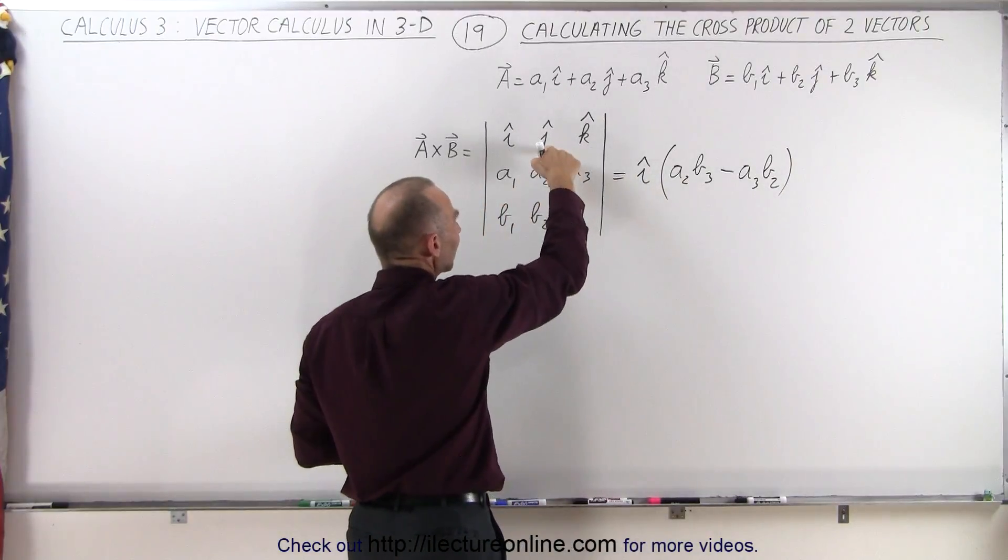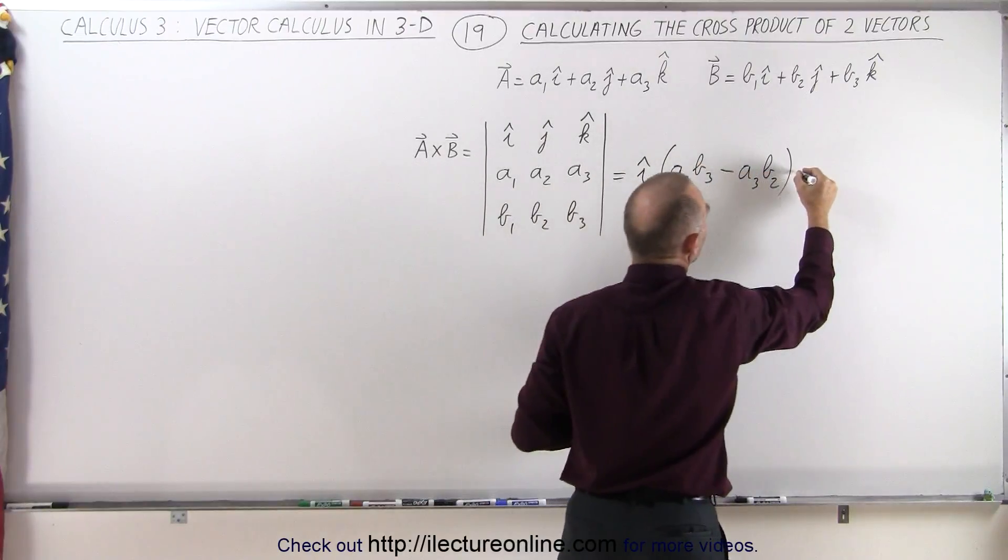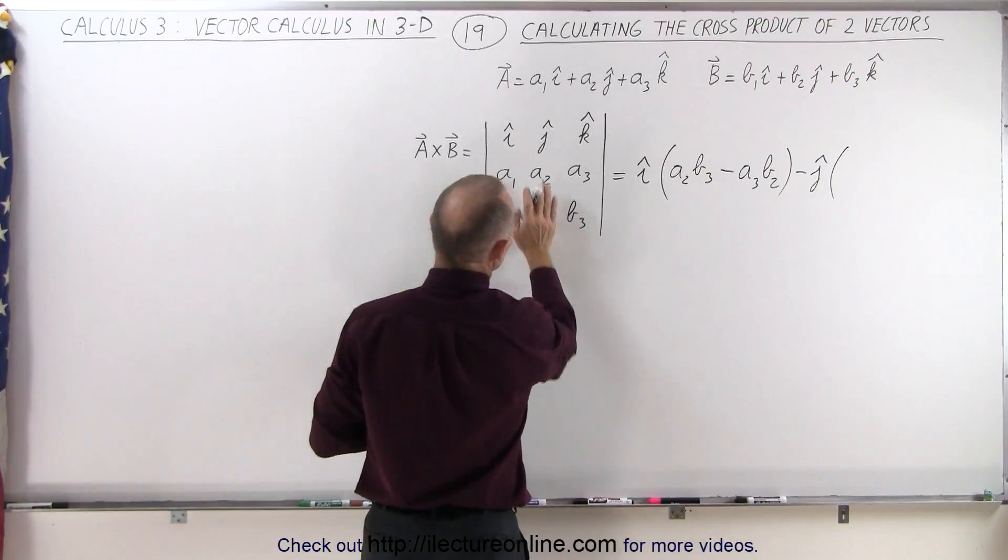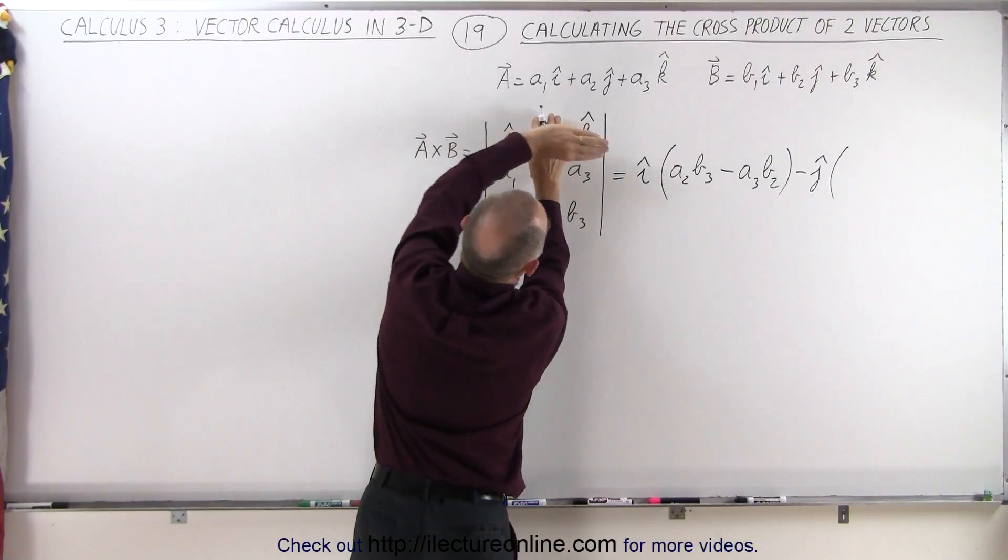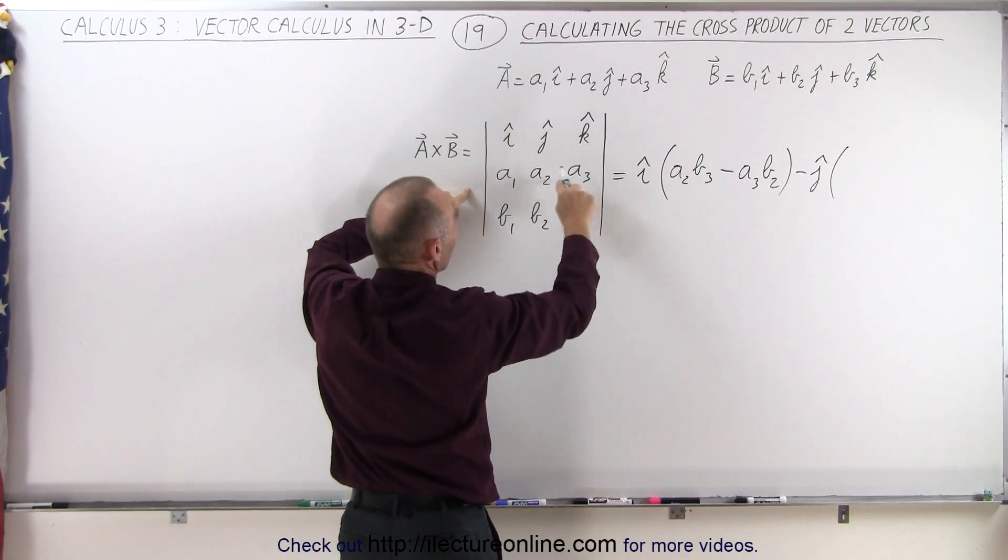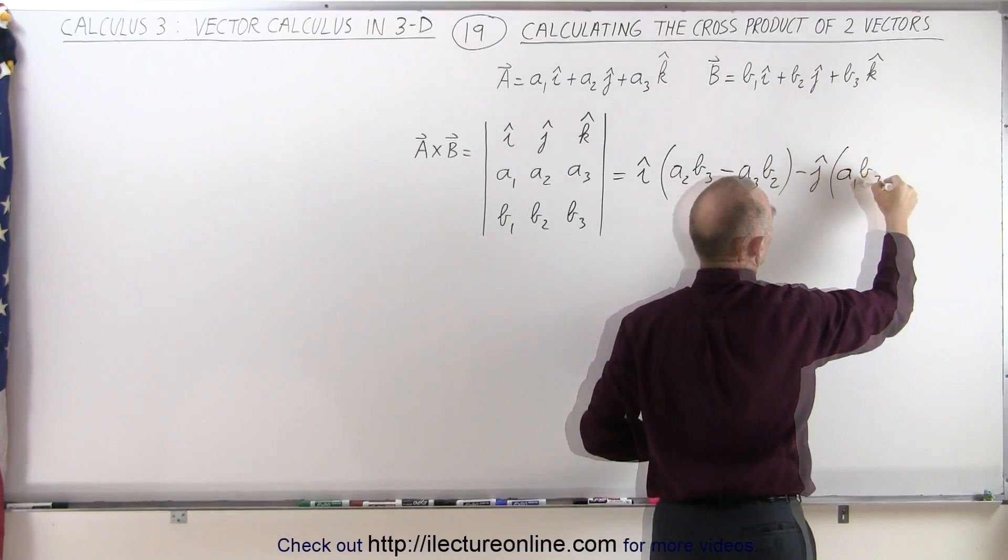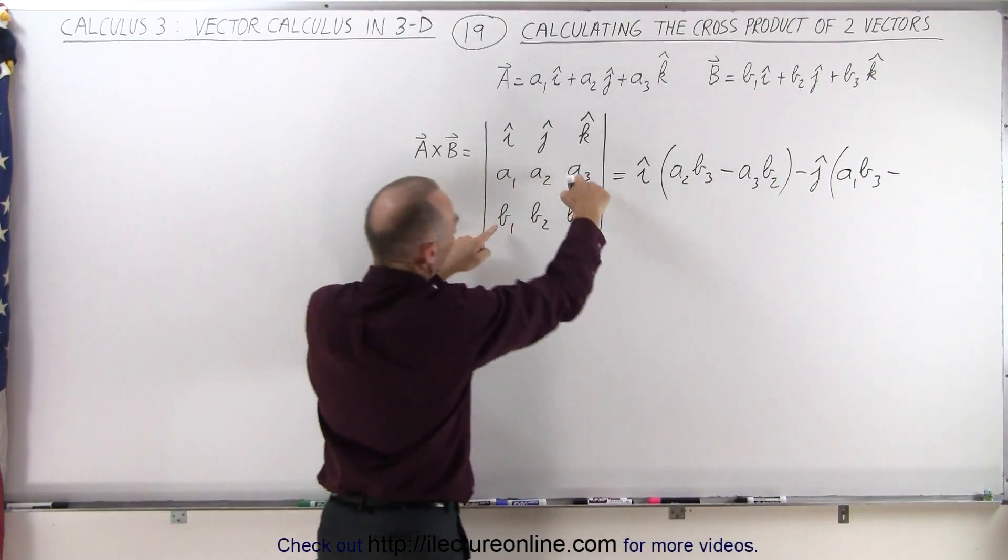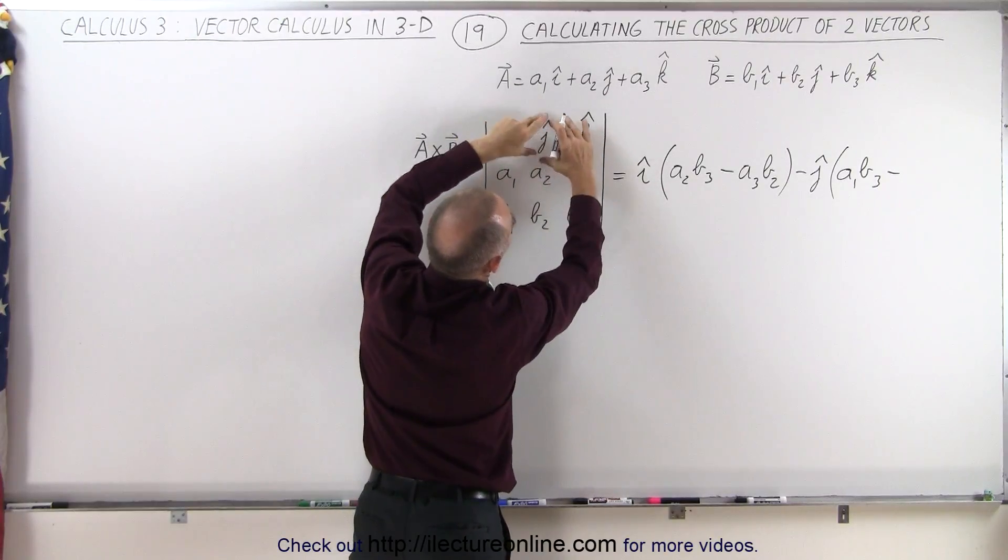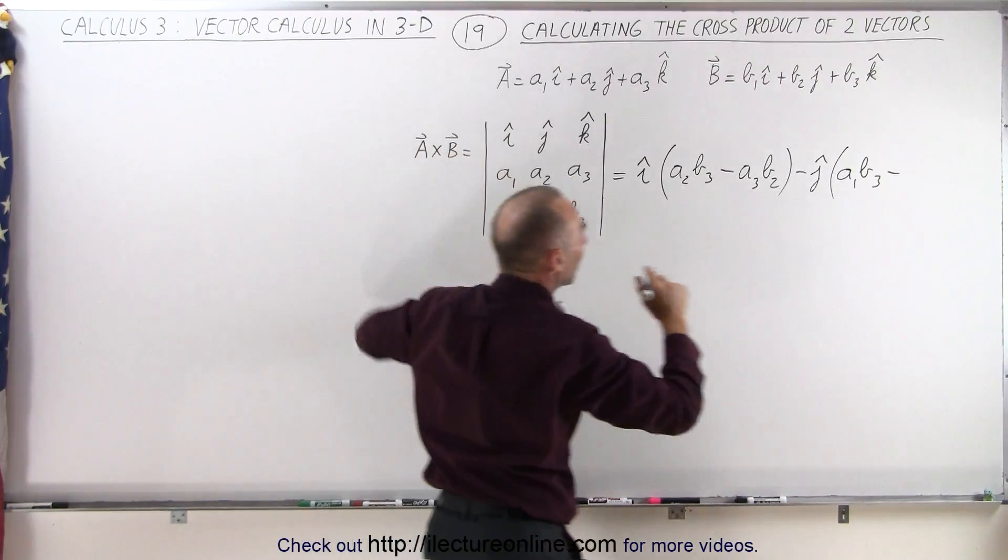And now we take the second element, but this becomes negative, so we go plus, minus, plus. So this becomes minus the unit vector in the y direction. Now you get rid of this column and this row that leaves you with these four elements, so you multiply these two elements and subtract when you multiply those two elements. So A1 times B3 minus the product of these two elements. Remember, you got rid of this column and this row when you take the J component over here, so it's A1B3 minus A3B1.